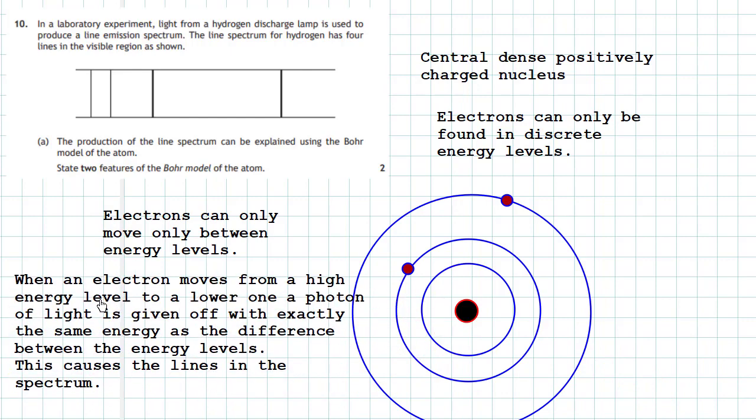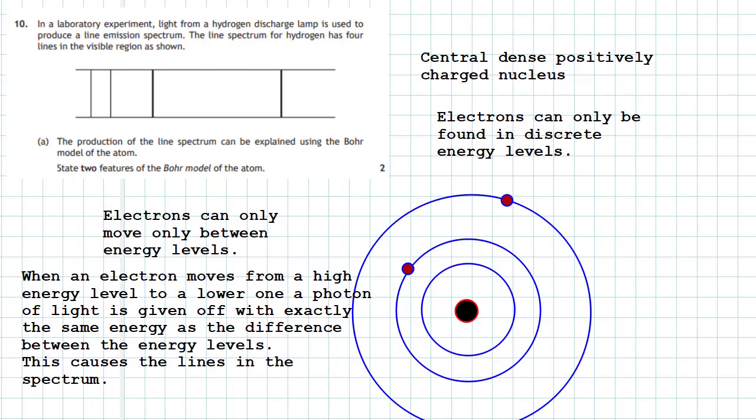When an electron moves from a high energy level to a lower one, a photon of light is given off with exactly the same energy as the difference between the energy levels — this causes the lines in the spectrum. You have four phrases here and can pick two. I would pick: electrons can only be found in discrete energy levels, and when an electron moves from a high energy level to a lower one, a photon of light is given off with exactly the same energy as the energy difference between the energy levels.